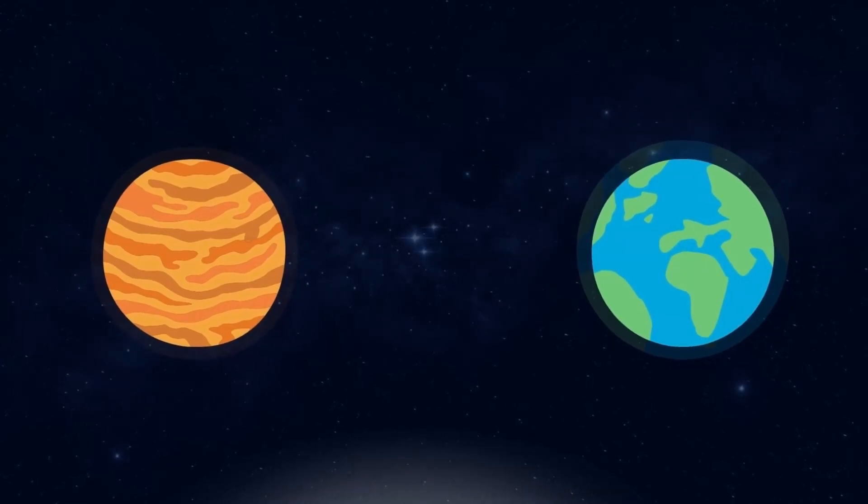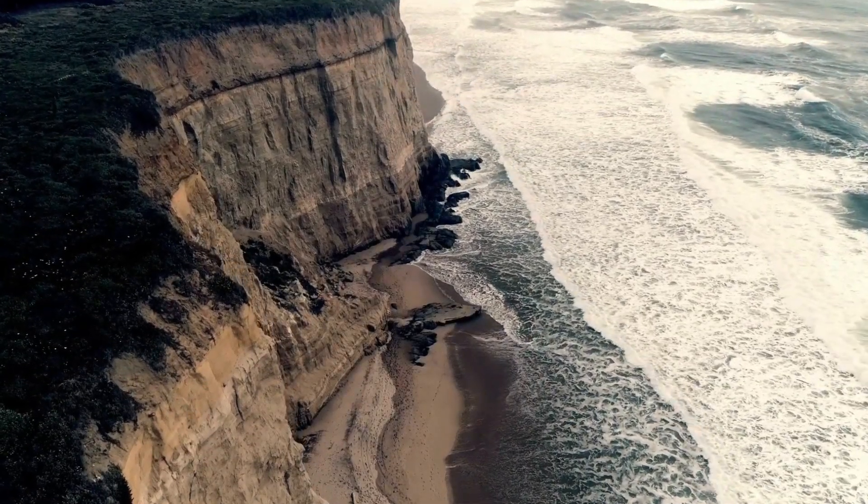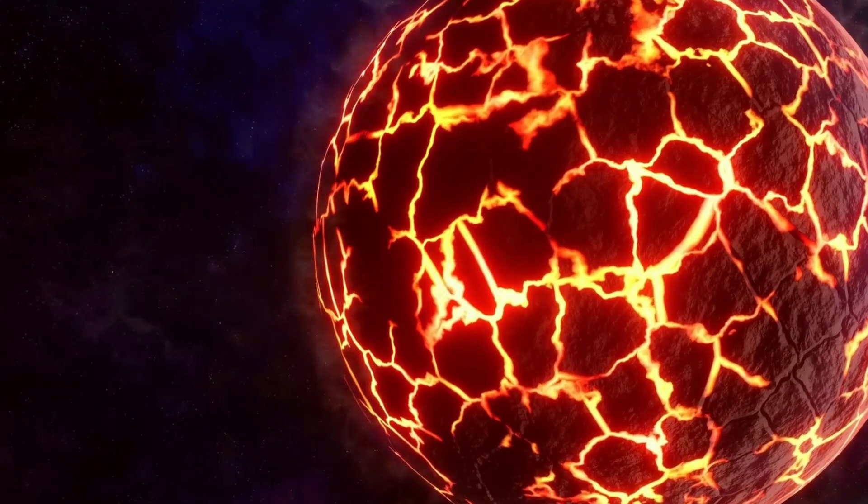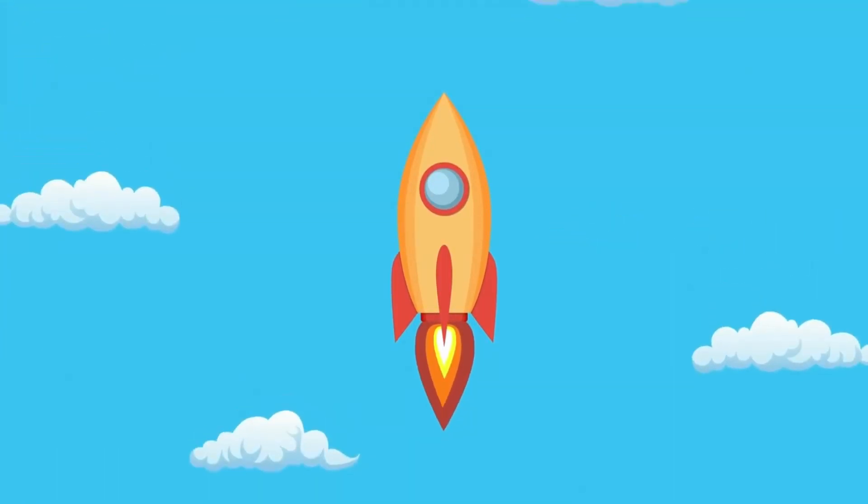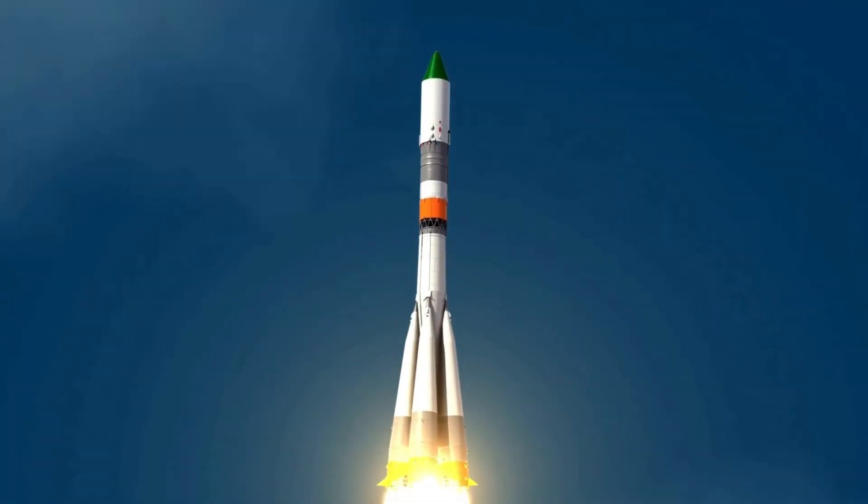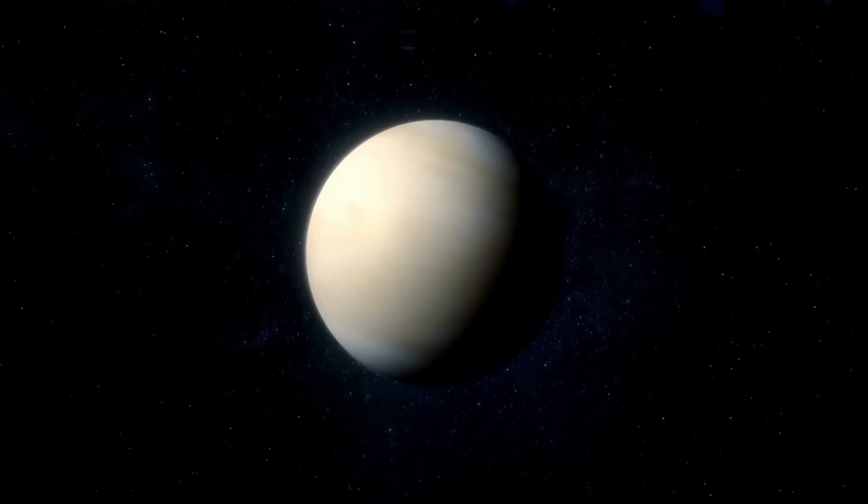Since Venus shares so many similarities with Earth, it may have been the first habitable world in the solar system, replete with an ocean and Earth-like climate. So, these missions hope to decipher how the planet devolved into a blazing inferno. Their projected launch date ranges from 2028 to 2030. In addition, the Envision mission will be launched by the European Space Agency or ESA to Venus in the early 2030s.